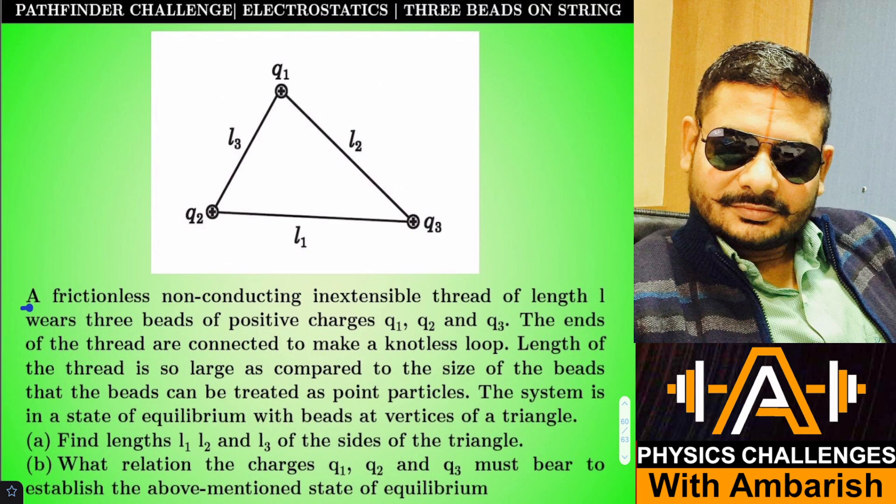The statement: a frictionless nonconducting inextensible thread of length L wears three beads of positive charges q1, q2, and q3. So this is a frictionless string and there are three beads q1, q2, and q3 which are threaded onto the string.